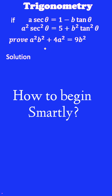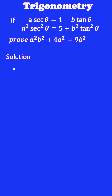For that, you have to first square on both sides of the first equation, and it will become a²sec²θ equal to (1 - b·tanθ)², which expands to 1 - 2b·tanθ + b²·tan²θ.